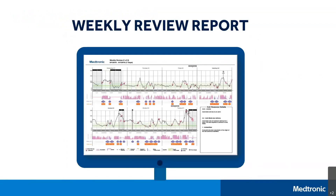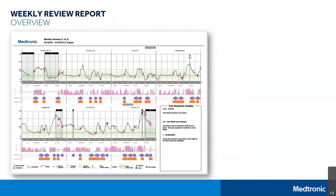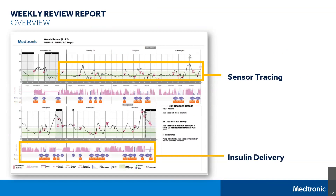The second report we will look at for the MiniMed 670G system is the Weekly Review Report. The Weekly Review Report gives a daily breakdown that shows your glucose trend broken out by day, as well as insulin delivery. You will also find details about SmartGuard auto mode exits in this report.